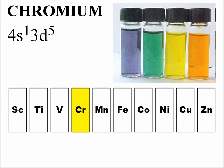We're going to start out talking about chromium, the fourth member of the d-block. Chromium is one of your two exceptional electron configurations. You would think the configuration would be 4s² 3d⁴, but chromium borrows an electron out of the 4s to complete the half filling of the d-block, so the electron configuration is really 4s¹ 3d⁵.